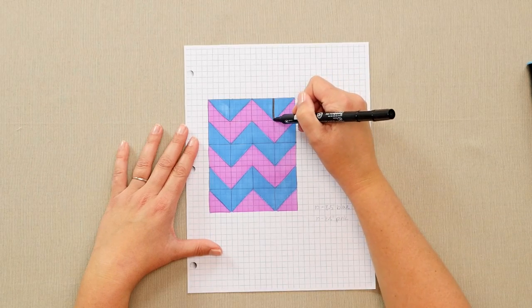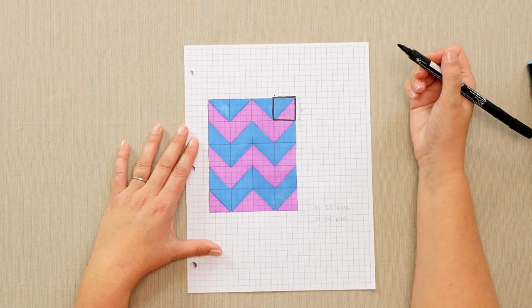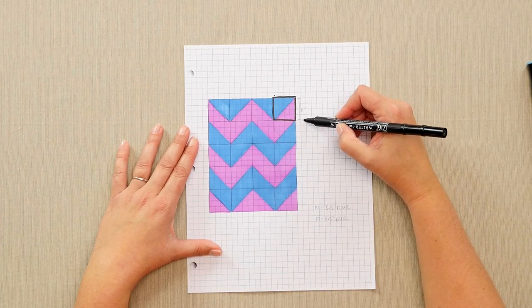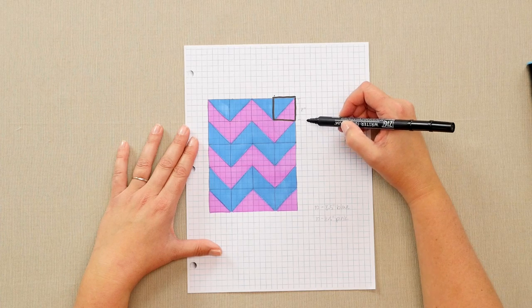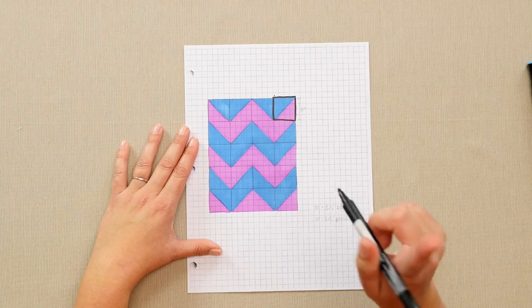Once we've designed the quilt, we'll want to cut out the fabric to be able to make the quilt. The cutting size is determined by the finish size of each block. If this is an eight inch block, the cutting size for my half square triangle will magically be one inch larger.